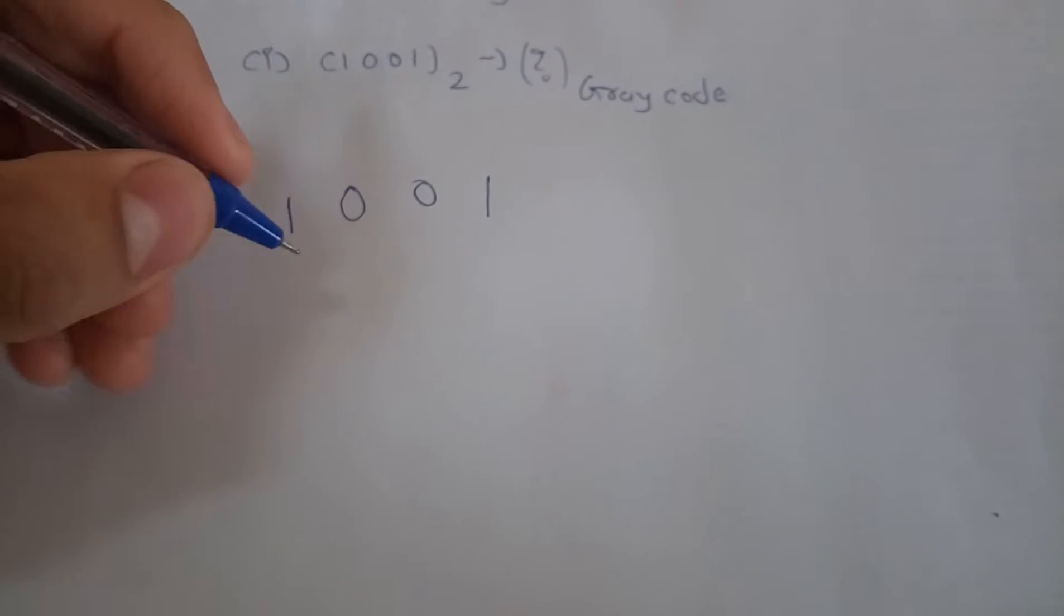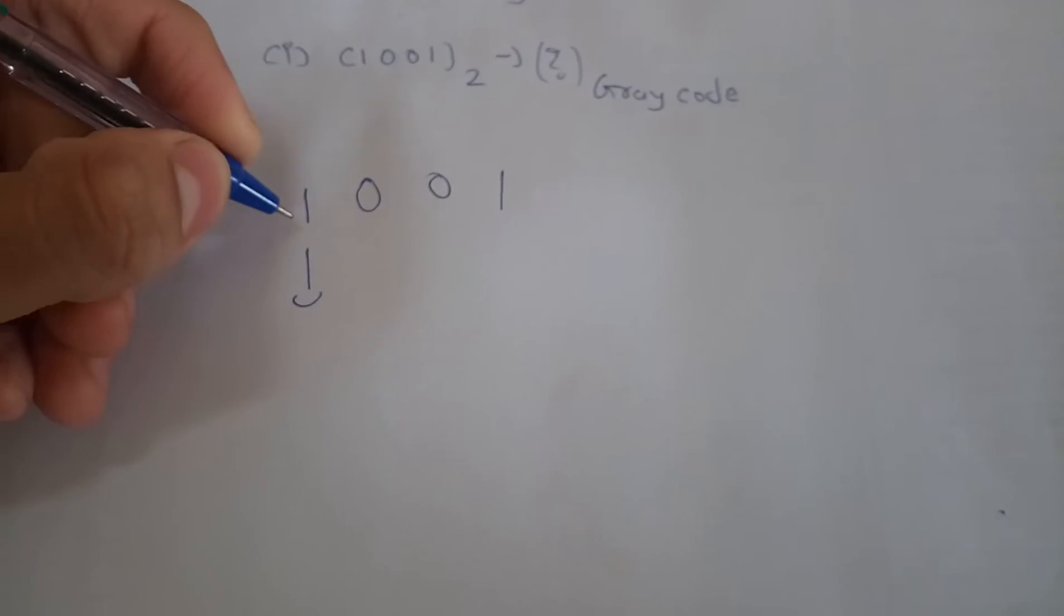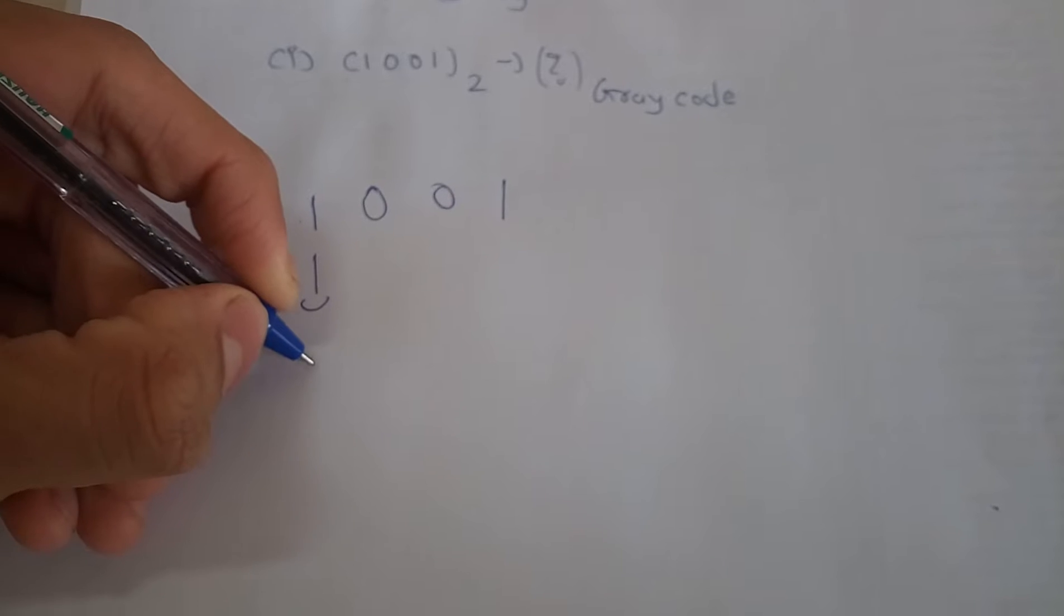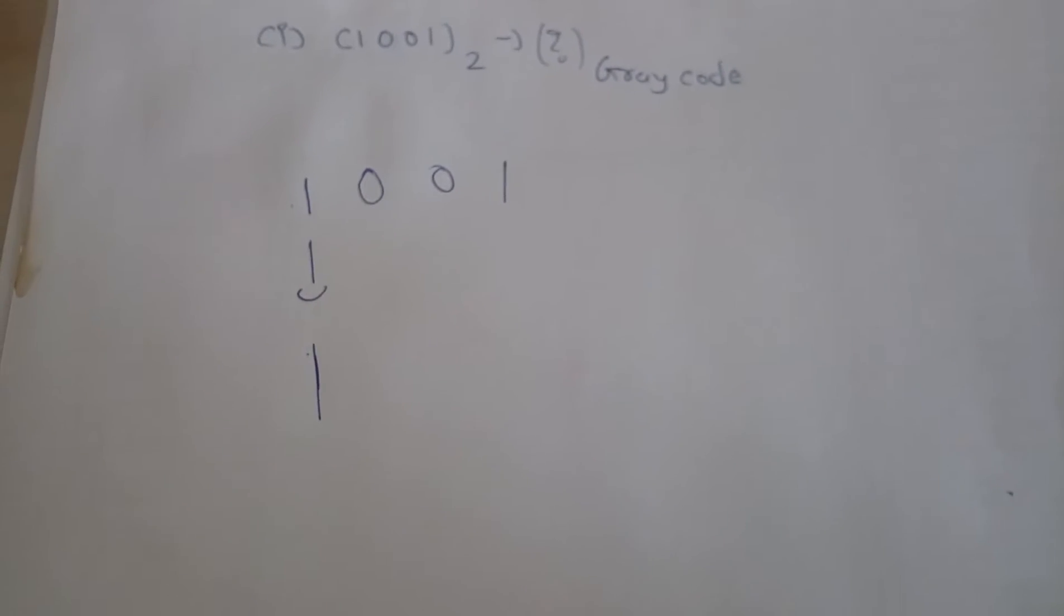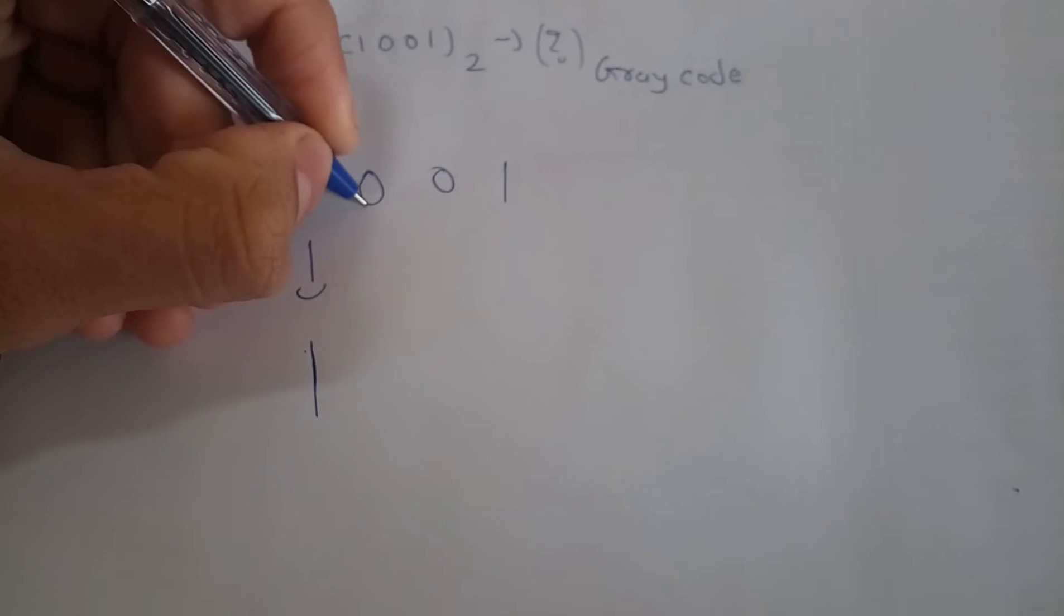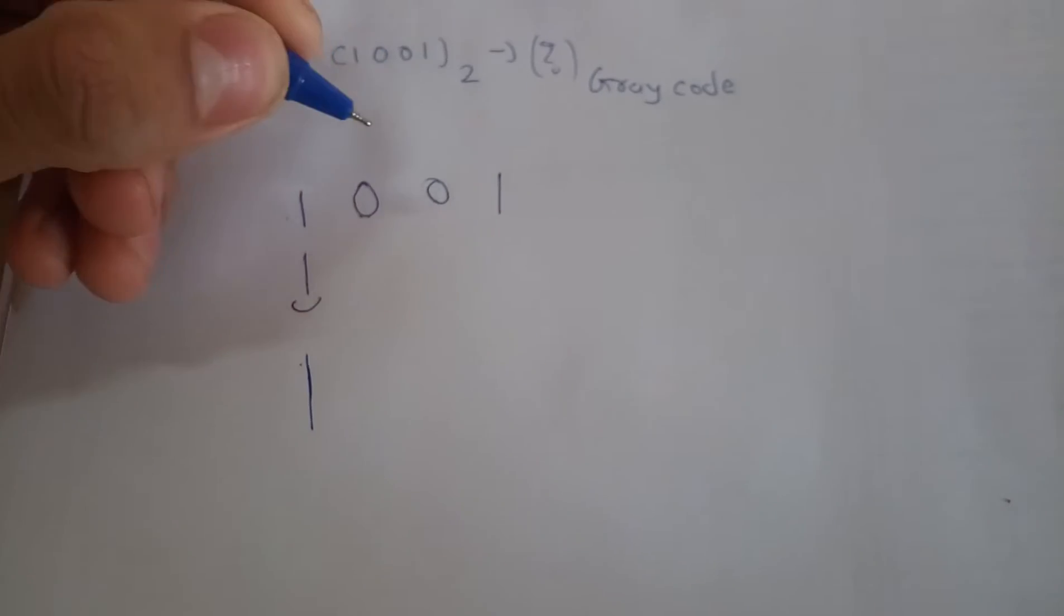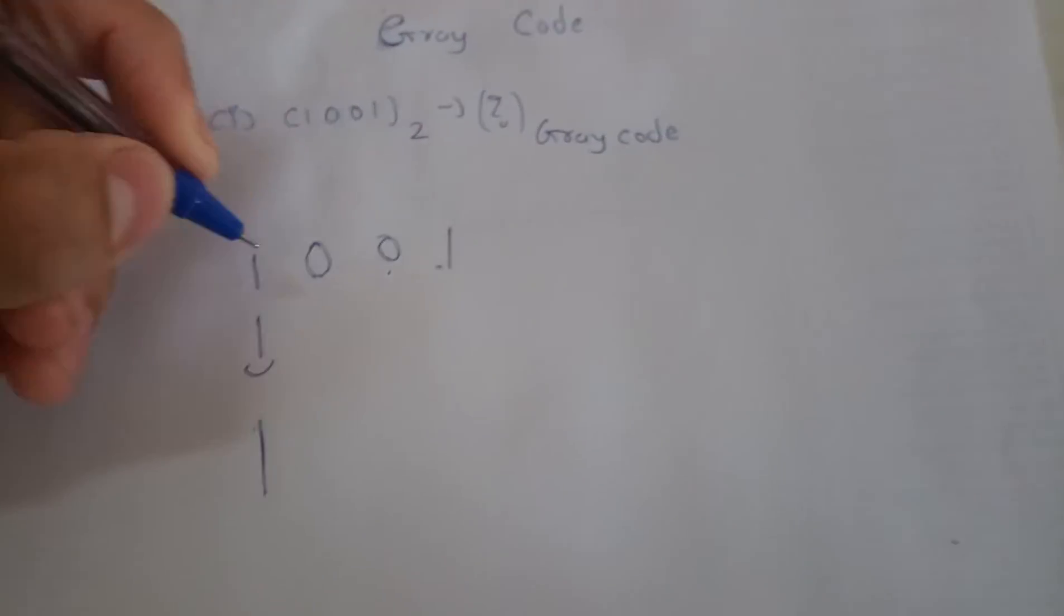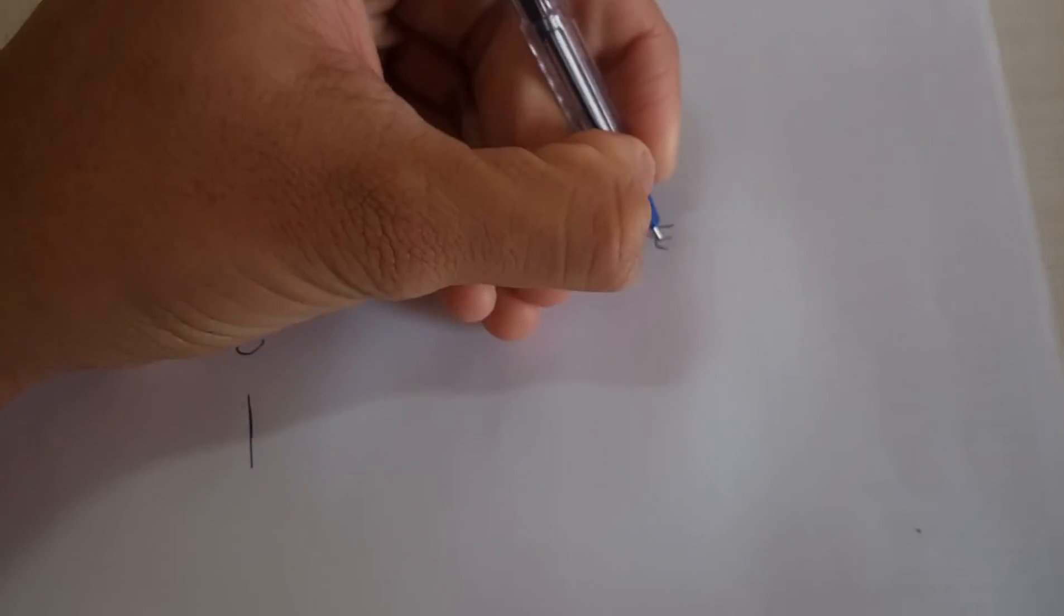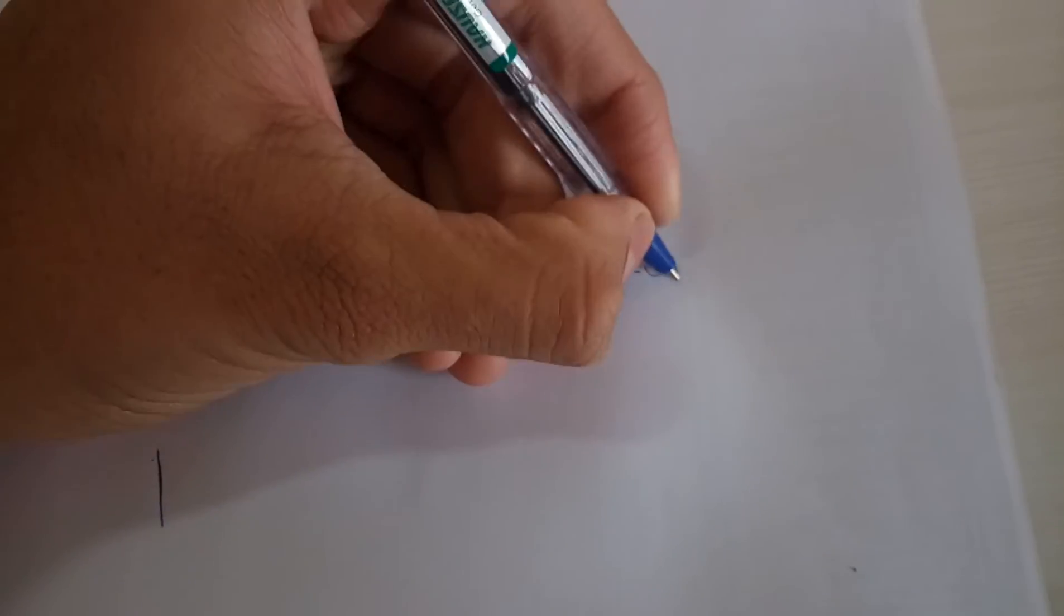So you have to put the first bit as it is, and after that you have to take the XOR gate of the next two bits. Now what will be the truth table of XOR gate? I'm writing it over here.